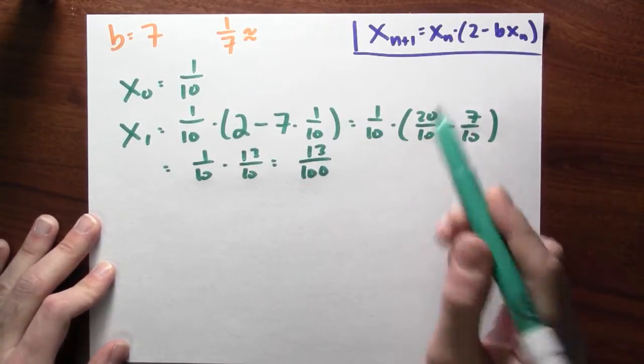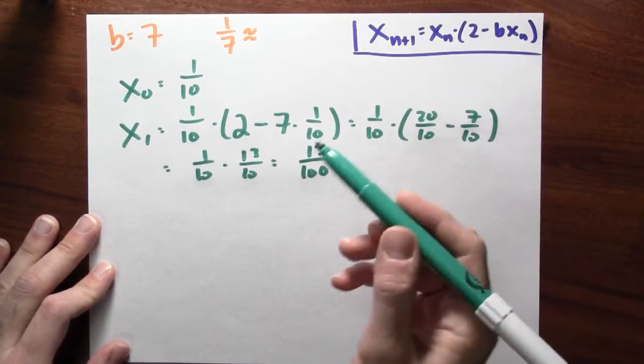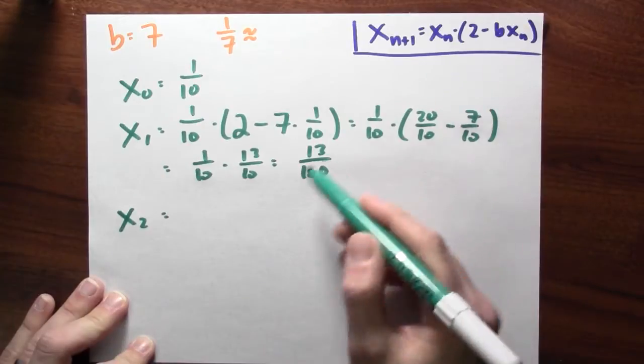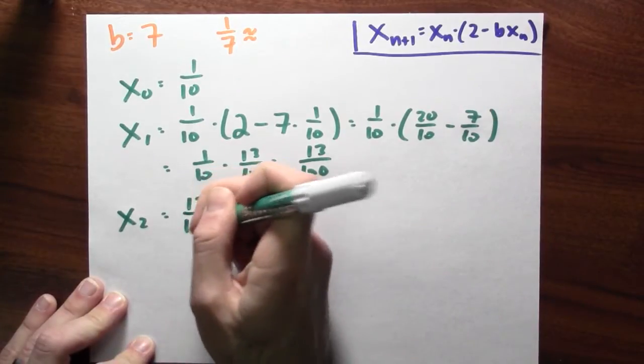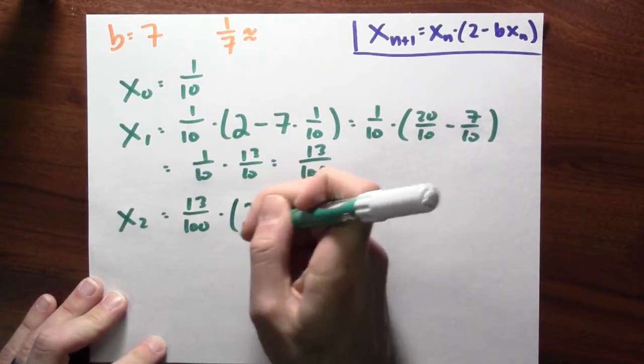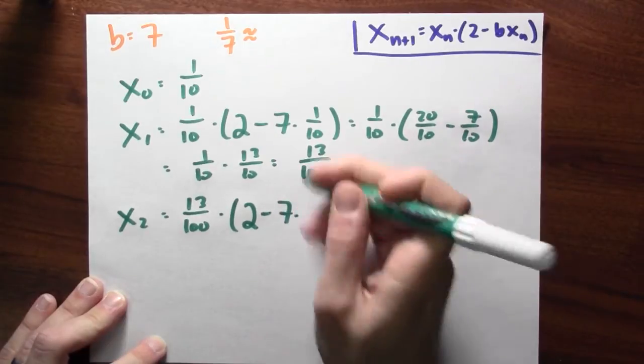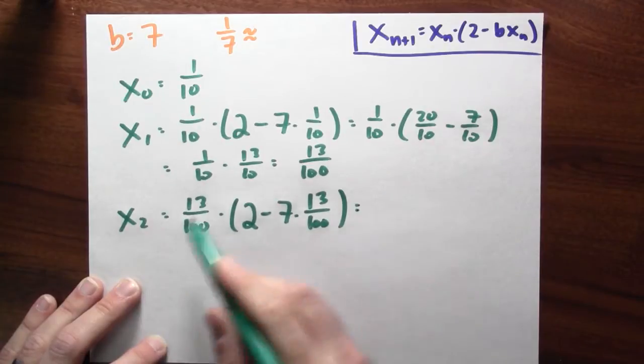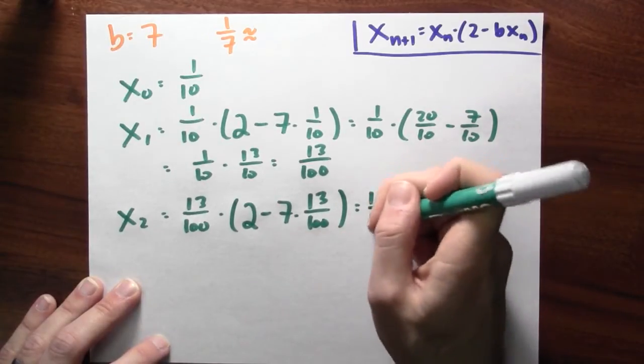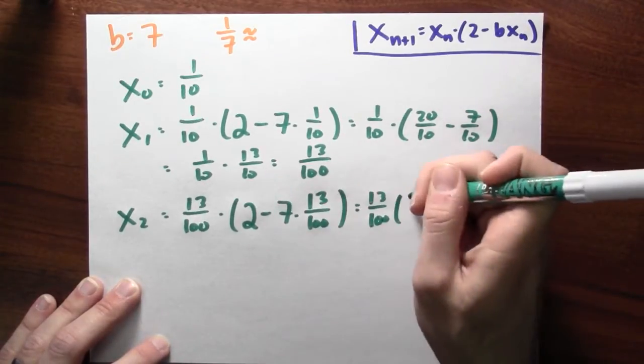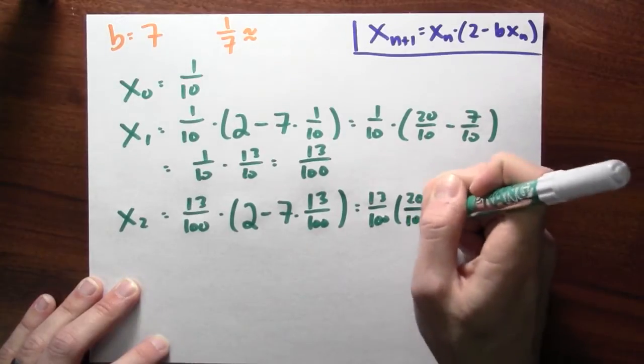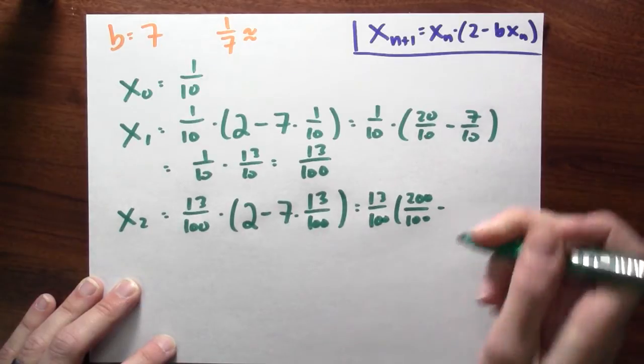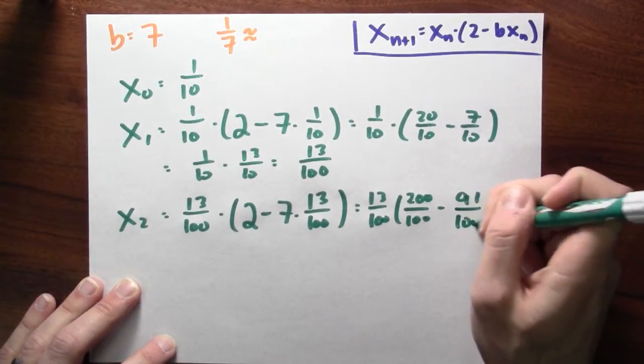But I can now repeat this process using this formula again. So I'll get a better guess here, x sub 2, by starting with my previous guess, which is 13 hundredths. Multiplying that by 2 minus 7 times my 13 hundredths. Now I can calculate what this is. So 13 hundredths. Instead of 2, I'll write 200 hundredths. It's another name for 2. Minus, instead of 7 times 13, I'll multiply that out. I'll get 91 hundredths.